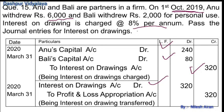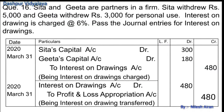Interest on drawings account debit to profit and loss appropriation account. Another question: Sita and Gita are partners in a firm. Sita withdrew rupees 5000 and Gita withdrew rupees 3000 for personal use. Interest is charged at the rate of 6%. Pass the journal entries for interest on drawings.